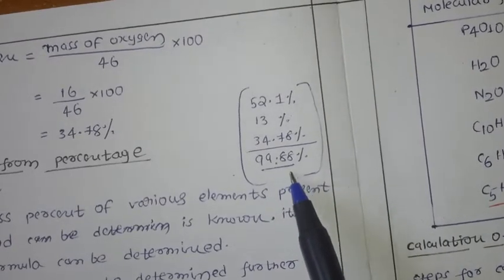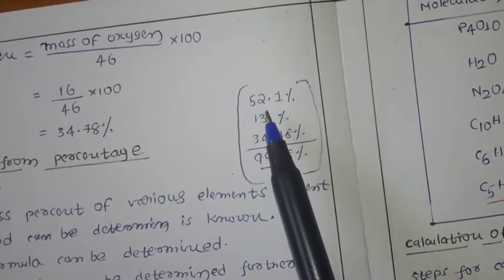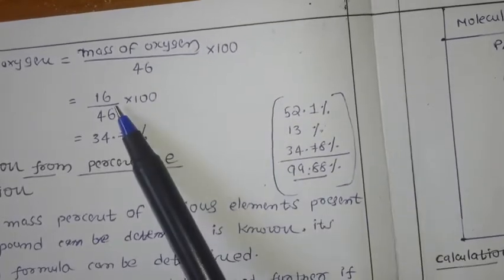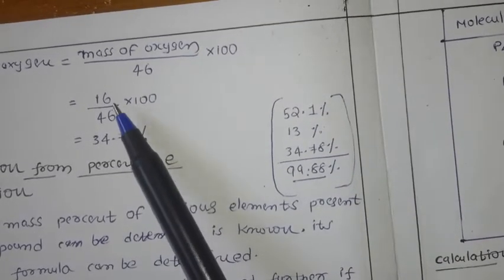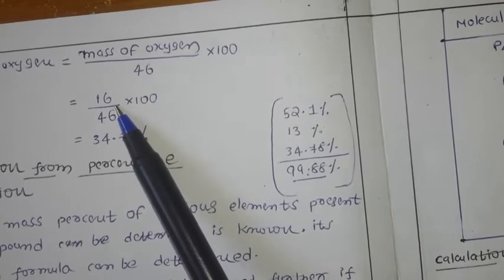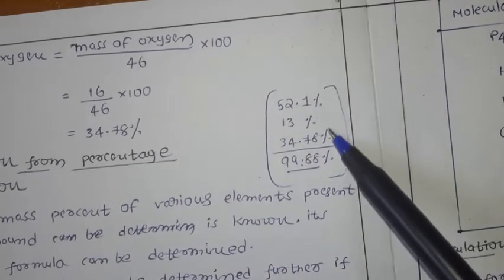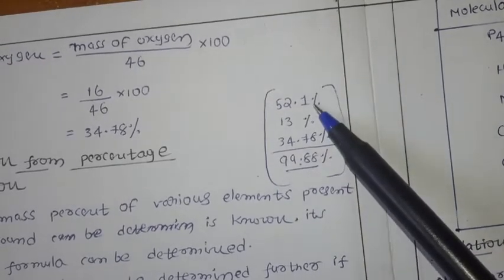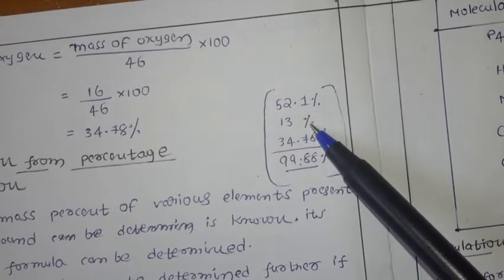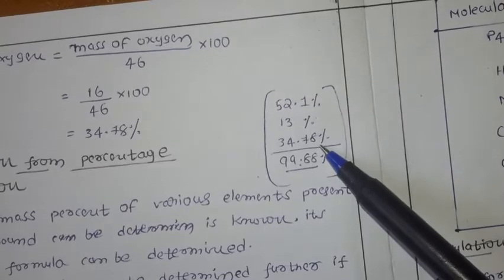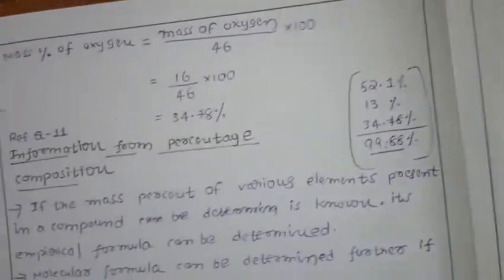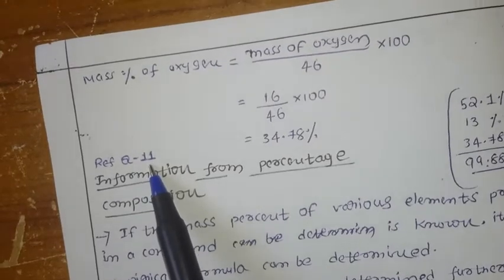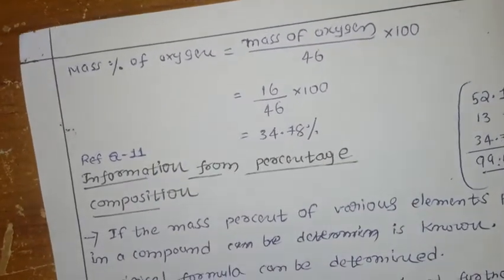It's almost 100%. The small difference is because we are taking approximate values. So in total 100%: this is the carbon percentage, this is the hydrogen percentage, and this is the oxygen percentage. You can practice this concept — refer to question number 11 in the textbook based on this concept.